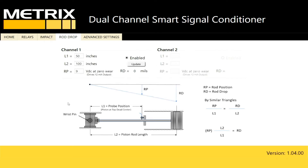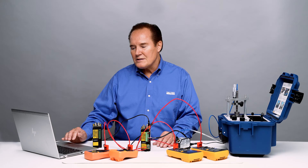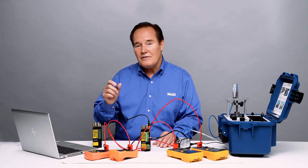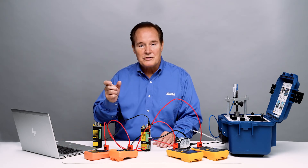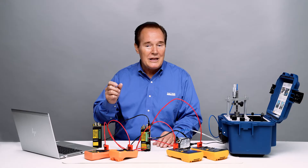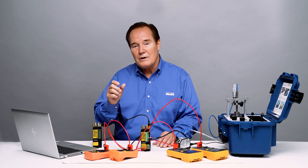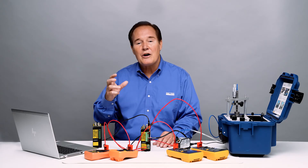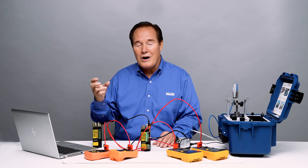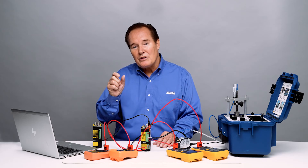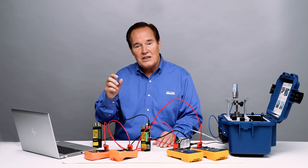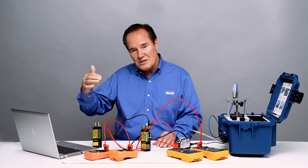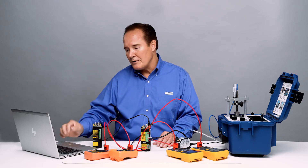Since I put 9 volts in we have zero offset. If I had 10 mils of wear I would put in 8 or 10 volts, but I'm putting in 9. If I already knew what the wear was I could put in the right voltage to get the amount of wear I have now, and then we could see the future wear.